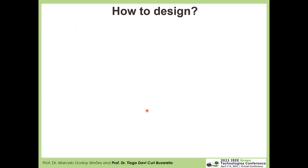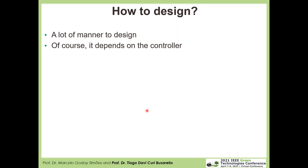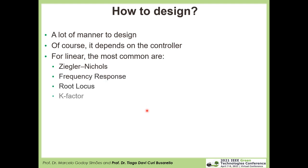How to design a digital controller for power electronics? There are many methods depending on the controller. For linear controllers, the most common methodologies are Ziegler-Nichols, frequency response, root-locus technique, decay factor, and also trial and error. Even though trial and error is sometimes not accepted by researchers, it is a technique commonly used for designing, for instance, a PI controller with two parameters — you make some guesses about high and low values and can quickly reach good values.